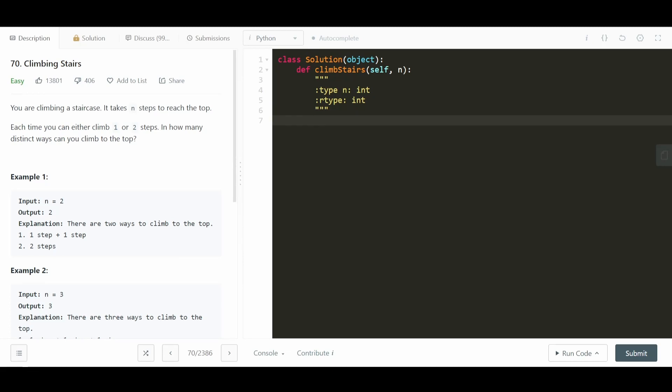Okay, let's first do the recursive solution. So let's do our base cases first. If n is equal to zero, we return zero. Else, if n is equal to one, we return one.